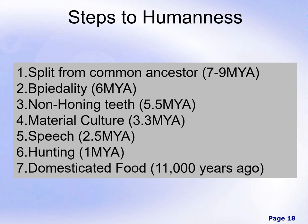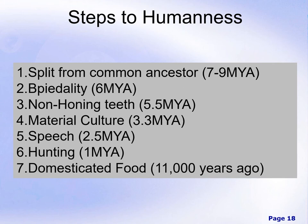At 5.5 million years ago, we see non-honing teeth — our evolutionary lineage began to lose the very sharp canines seen in most other mammalian species. At 3.3 million years ago, we start to see the development of material culture, meaning stone tools. At 2.5 million years ago, we think speech may have occurred because language needed to happen before large-scale cooperative hunting of large game animals could be successful. At around 1 million years ago, we start hunting large game like woolly mammoths, and at around 11,000 years ago, we see the domestication of foodstuffs like ancient barleys and wheats.